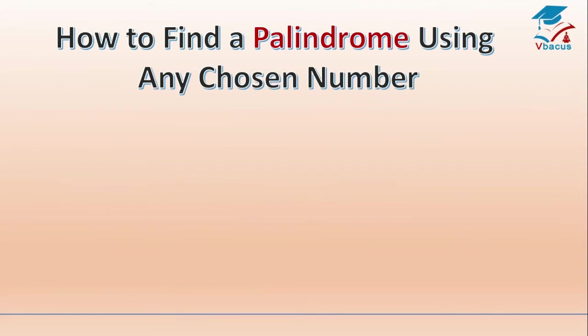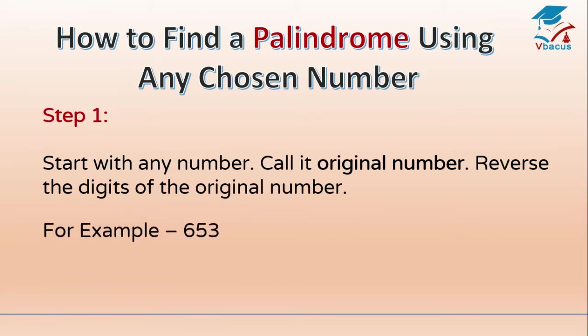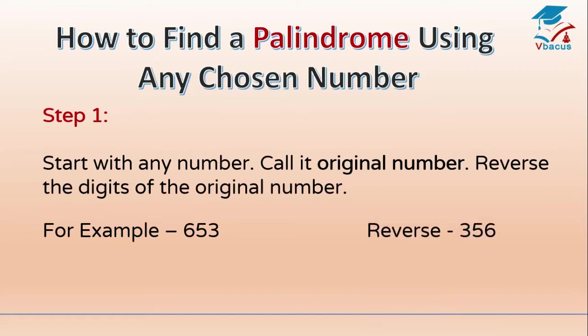How to find a palindrome using any chosen number? Step 1: Start with any number — call it the original number. Reverse the digits of the original number. For example, 653. The reverse of it is 356.